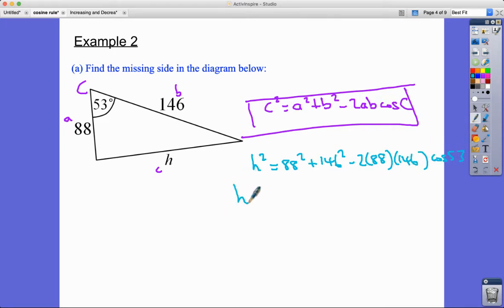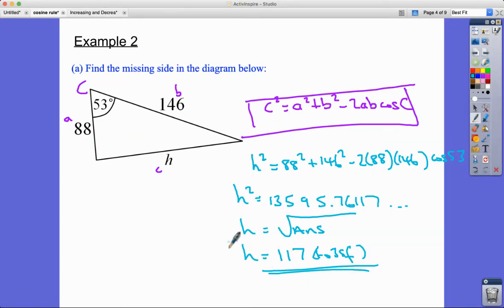That's going to give us a value of h² of 13595.76117. Keep it in the calculator, we're just going to square root that answer using my answer button, and I get an answer of 117 to three significant figures. That's a side length - the question doesn't tell me the units, so 117 to three significant figures.